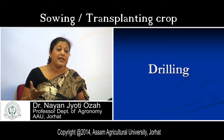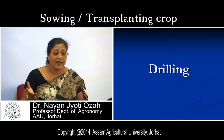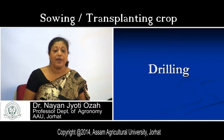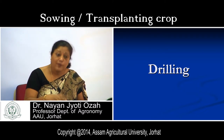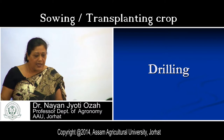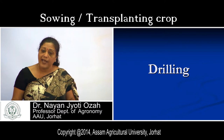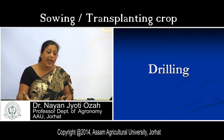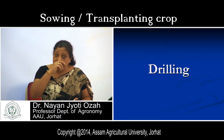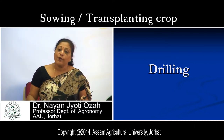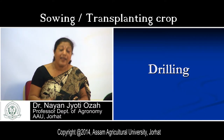In drilling, row-to-row spacing and depth of sowing are maintained. The optimum plant population at a particular depth will germinate depending upon the seed size. Seedlings will emerge at the same time. Since spacing is maintained, you can go for intercultural operations: earthing-up can be done, weeding can be done, picking will be possible, and spraying of agrochemicals like fertilizer, insecticides, and pesticides will also be possible.